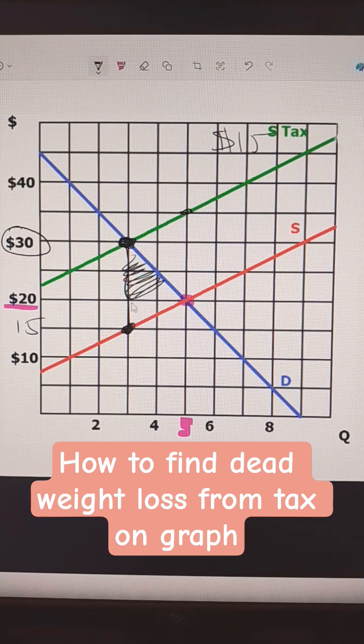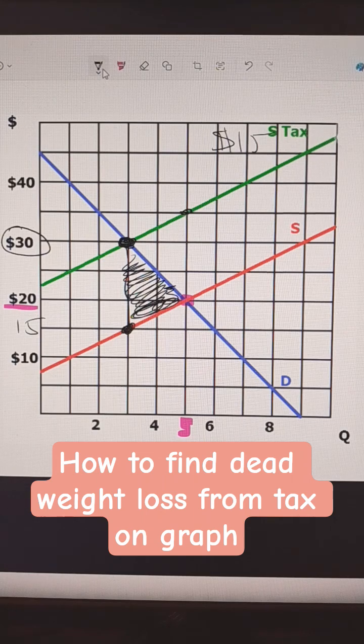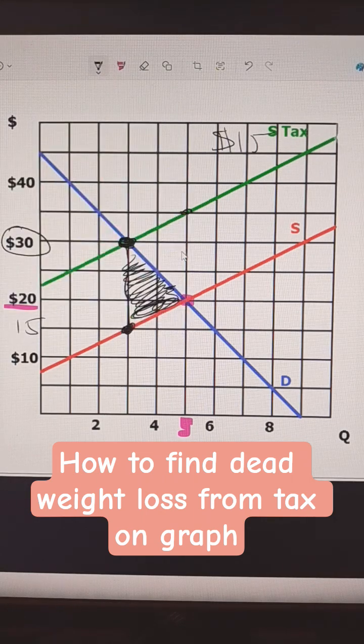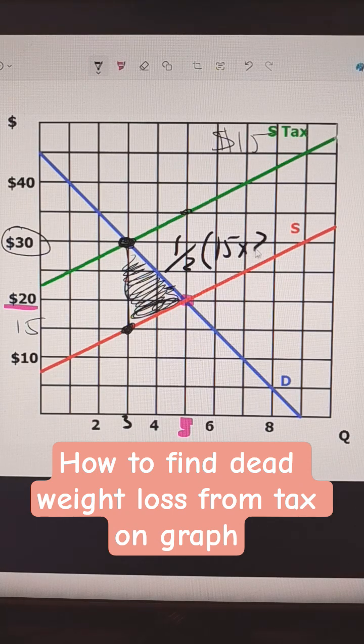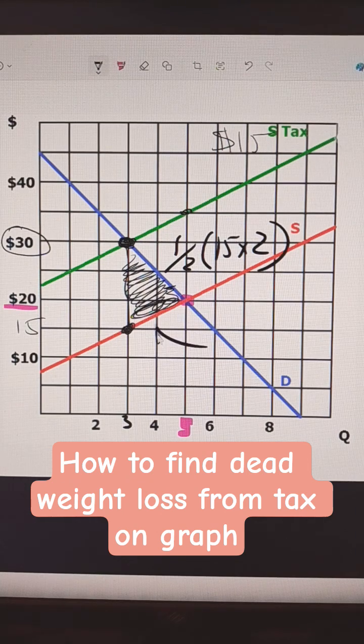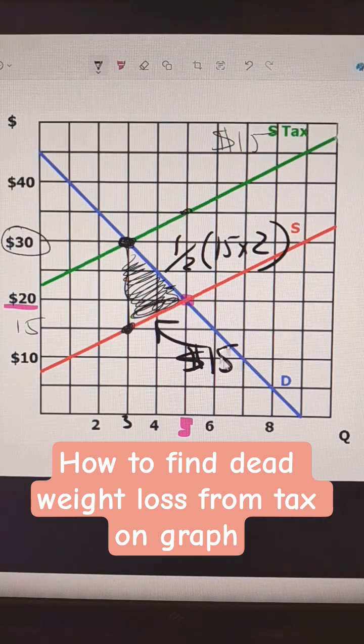The deadweight loss is going to be this triangle right here. So we just need to calculate that, and that's going to be one-half, just a triangle here, one-half, 15, because that's the amount of the tax, times the number of units we lose. So this is 3 to 5, so that would be 2. That's pretty easy, $15 is the deadweight loss from this tax.